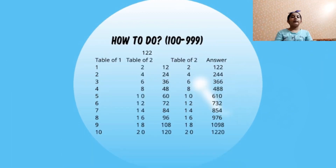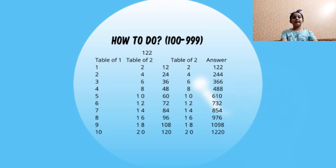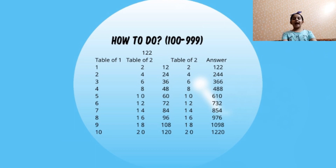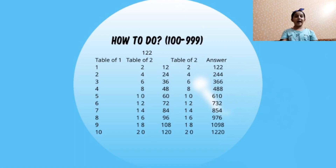Now the number is 122. So first we have to write the table of 1. The second step is to write the table of 2. Now the third step is simplify. We have to add this table of 1 with the tens digits of this table of 2 and the ones digits we have to write them as it is. Now let us see how.